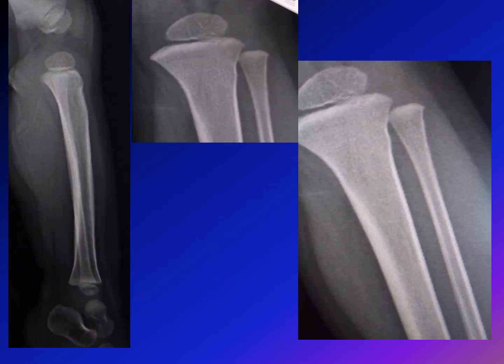The most common location for torus fracture is the distal radius, but it can happen in other places. Here you can see a torus fracture in the proximal tibia. You can see the compression that happens in the lateral view. In the anterior-posterior view of the lower leg, when we magnify that part of the proximal tibia, you can see the small knob here. This is a torus fracture of the proximal tibia.